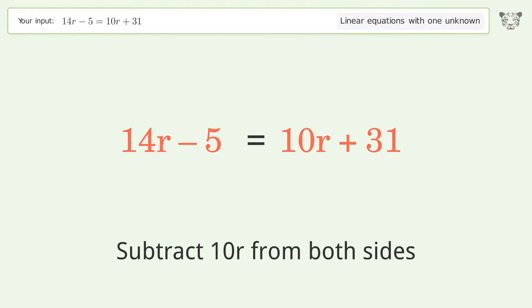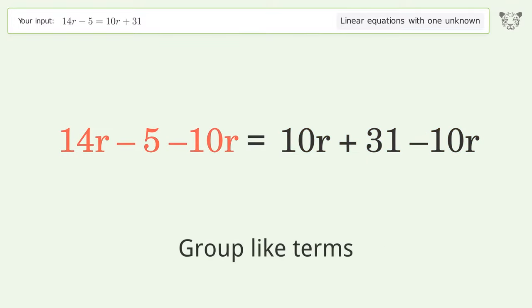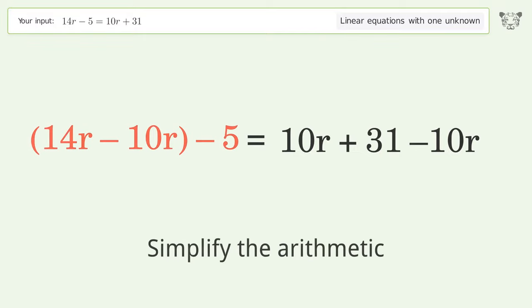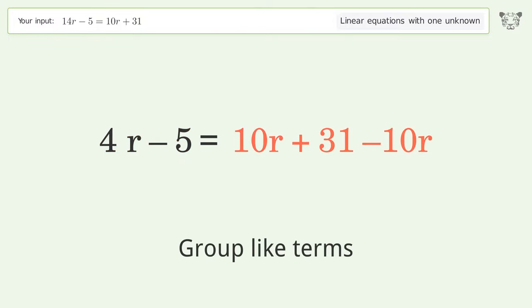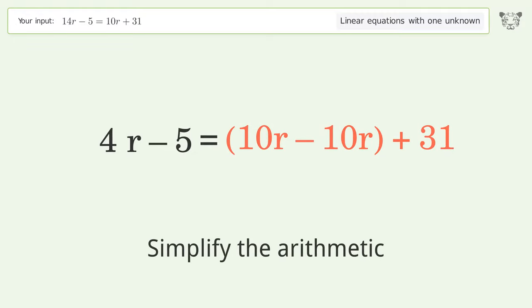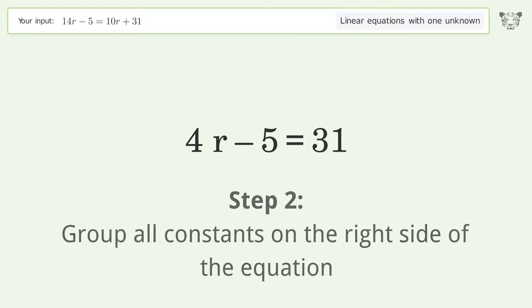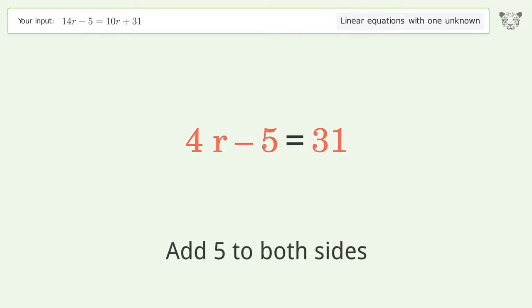Group like terms and simplify the arithmetic. Group all constants on the right side of the equation by adding 5 to both sides.